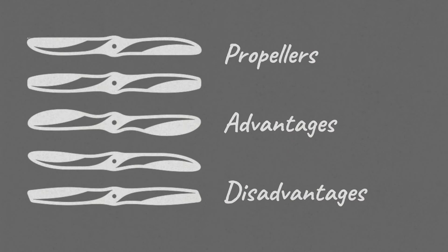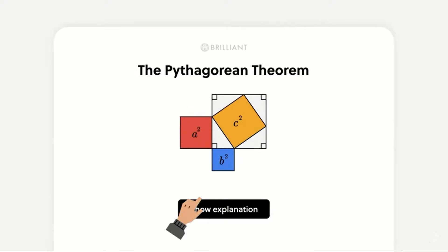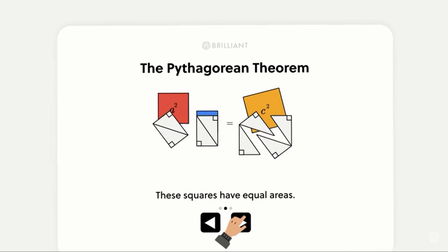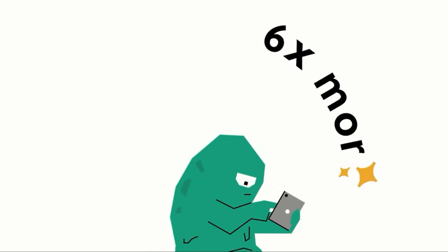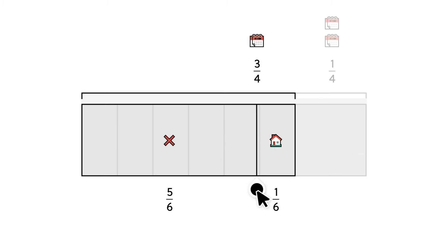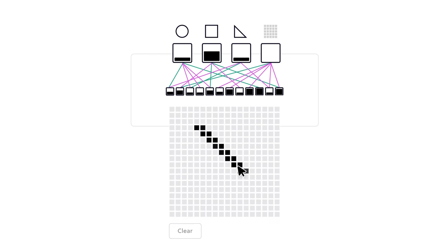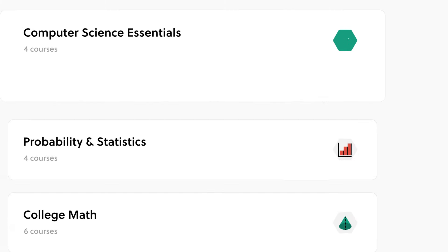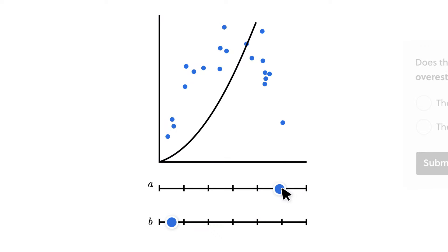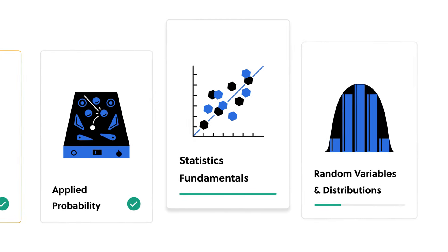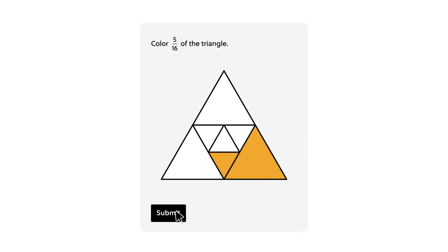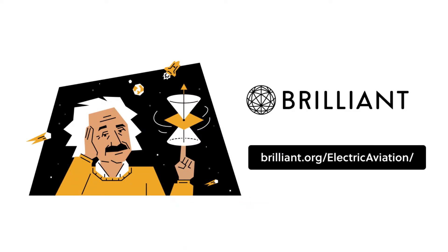This video is sponsored by Brilliant.org. If you've ever visited a science museum, you know how effective interactive exhibits can be — Brilliant places all those exhibits in the palm of your hand. You learn through puzzles and challenges, understanding the real meaning of equations. Brilliant has thousands of lessons from foundational to advanced maths, AI, data science, neural networks and more, with new lessons added every month. Try everything free for 30 days at brilliant.org/ElectricAviation — the first 200 viewers get 20% off the annual premium subscription.